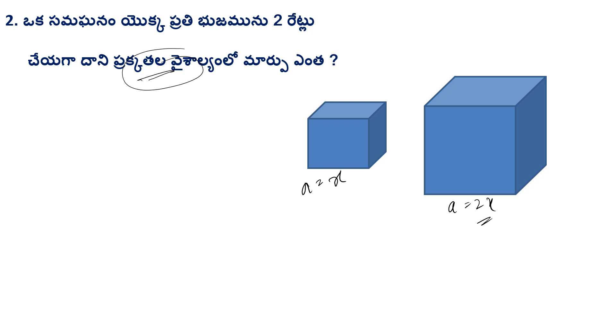The formula for lateral surface area is 4a². If a is equal to 2x, then the formula gives 4(2x)².